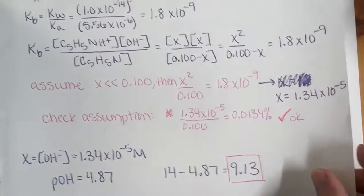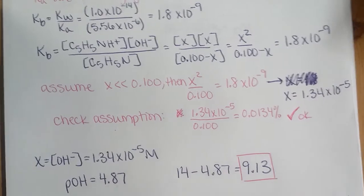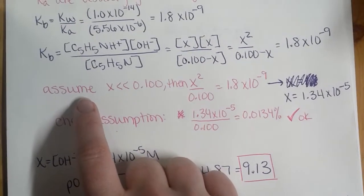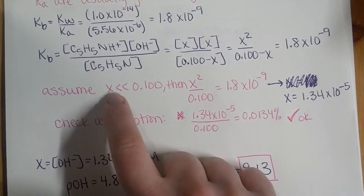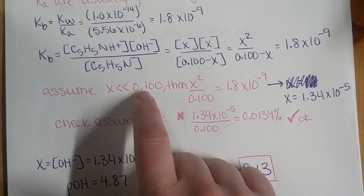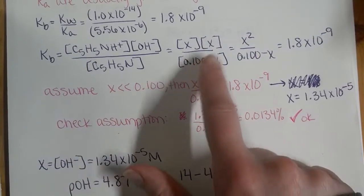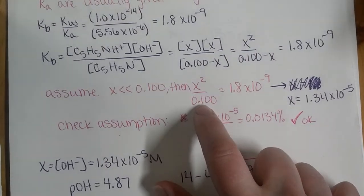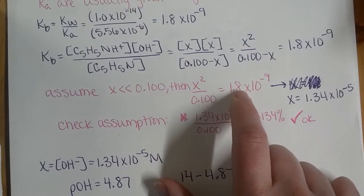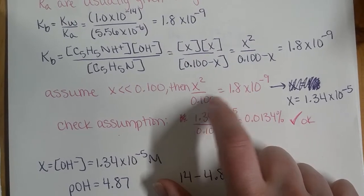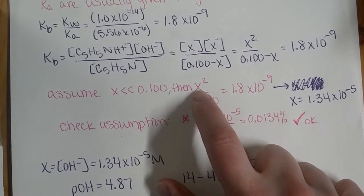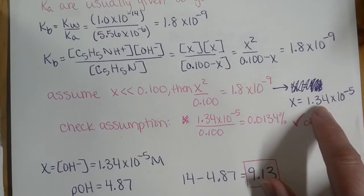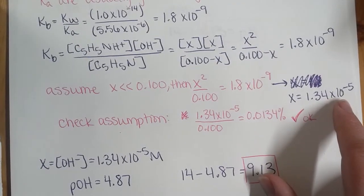Again, we want to keep our life simple, so we try to do our assumption. We're going to assume that X is much smaller than 0.100. And so our equation up here then reduces to this. So we multiply our Kb value times 0.1, take the square root of it to get X, and we get 1.34 times 10 to the negative 5.